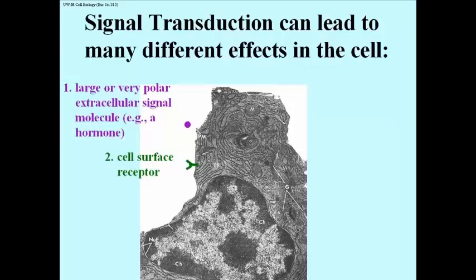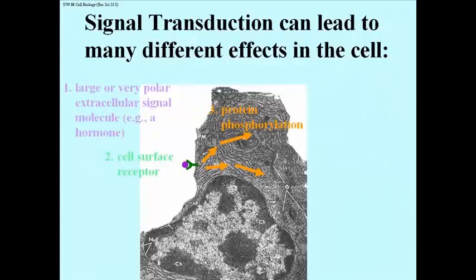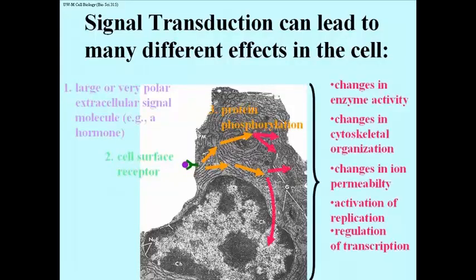Signal transduction produces many different effects in cells, from regulating enzyme activity to controlling gene expression. A large or polar signal molecule binds to the cell surface receptor shown here. The cellular response includes the phosphorylation of proteins, and when activated by phosphorylation, these proteins are responsible for a variety of different effects.